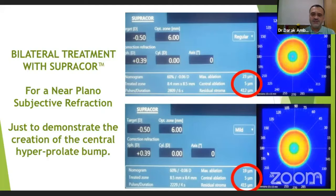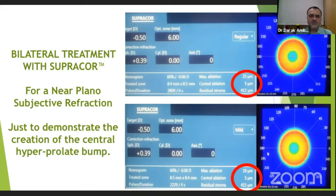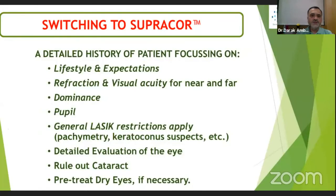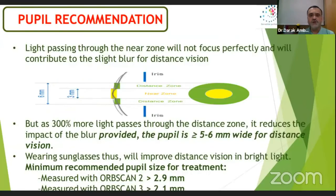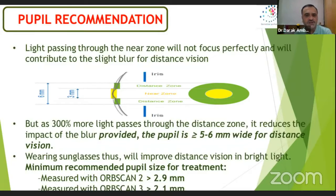Regarding bilateral treatment — initially the company suggests going unilateral, and principally everybody suggests doing the non-dominant eye. But SupraCore and presbyopic correction can be done bilaterally once you know about it. For detailed history and investigation, whenever you are treating presbyopic laser, do whatever tests are required when you do LASIK — the same investigation and evaluation is required for these treatments.